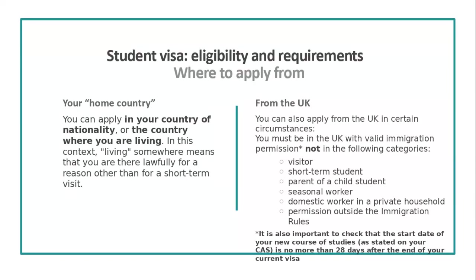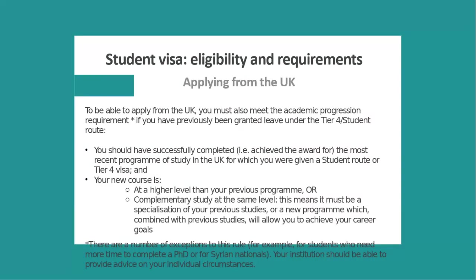Can you apply from within the UK? This depends on your circumstances and you should always check with your institution's advisors first. Generally, you can apply from the UK if you have valid permission to be here, as long as you are not here as a visitor, short-term student, parent of a child student, seasonal worker, domestic worker in a private household, or on permission outside of the immigration rules. The gap between your current visa expiry date and the programme start date on your CAS should also not be greater than 28 days.